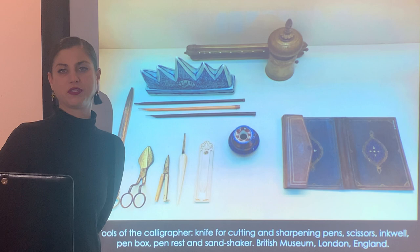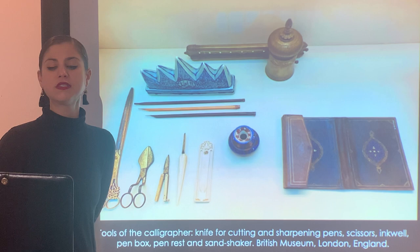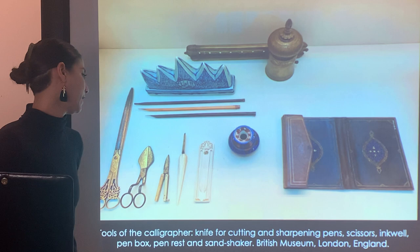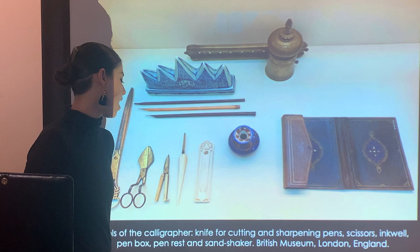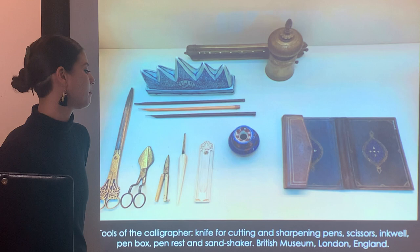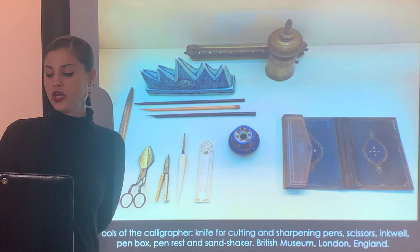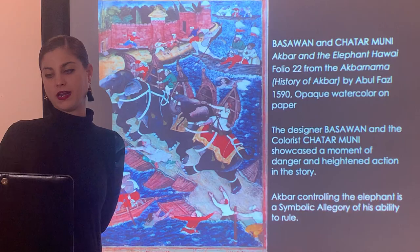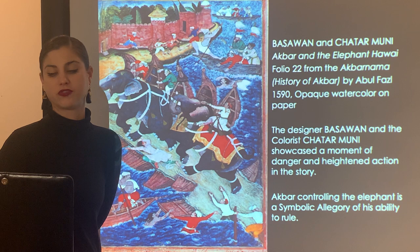Some of the tools of a calligrapher working on an illuminated manuscript — which may include pages with text as well as full-page illuminations — would include a knife for cutting and sharpening pens, scissors, an inkwell for iron gold ink, the pen box, the pen rest, and the sand shaker. This photo taken from the British Museum in London gives a really good idea of all the specific tools needed for the art of calligraphy and manuscript work.